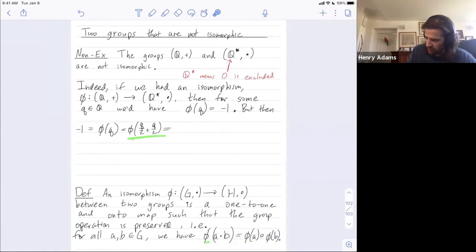So this right here is the left-hand side where a and b are both q over 2 and they've been combined using addition. And so now I'm going to write down the right-hand side, phi of a combined with phi of b, or phi of q over 2 combined with phi of q over 2, where the operation is now going to be multiplication. So this would have to be equal to phi of q over 2 times phi of q over 2.